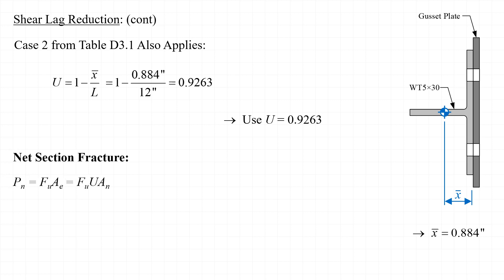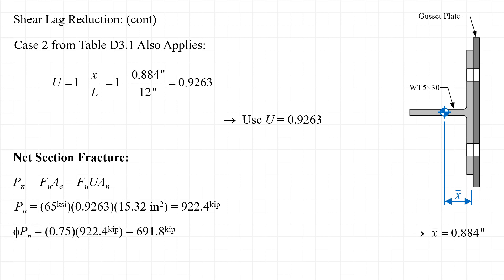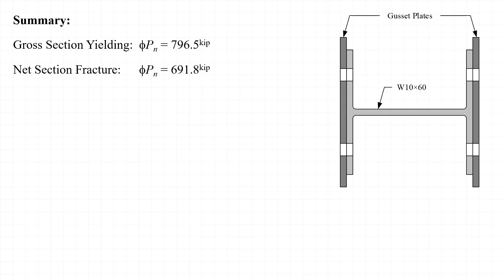Now we can calculate the nominal strength with respect to net section fracture. P sub n is equal to 922.4 kips. Applying the resistance factor of 0.75 for net section fracture, the design strength is 691.8 kips. In summary: the design strength for gross section yielding is 796 kips, and the design strength for net section fracture is 691 kips. The lower value governs, so net section fracture controls the strength of this member, and the available strength phi times P sub n equals 691 kips.